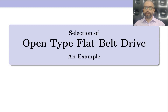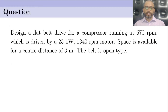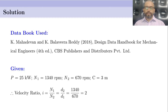Hello. Today we will be solving a numerical example on Open Type Flat Belt Drive. The question for today's session is: design a flat belt drive for a compressor running at 670 rpm, which is driven by a 25 kW, 1340 rpm motor. Space is available for a center distance of 3 m. The belt is open type. The data book used is the one prepared by Mahadevan and Balaveera Reddy, published by CBS Publishers and Distributors Private Limited.